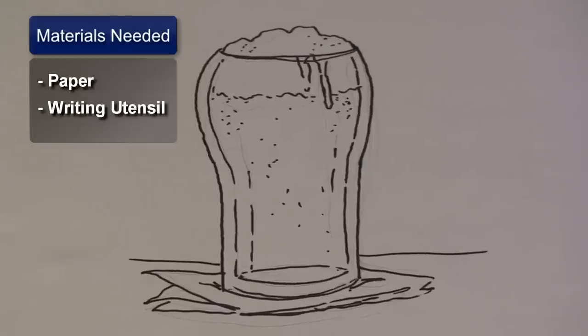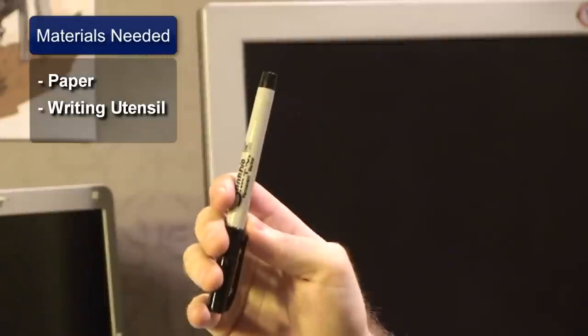First, you're going to want to get some paper and a writing utensil. Now to save time, I've already roughed this image out with pencil. Let's get started.